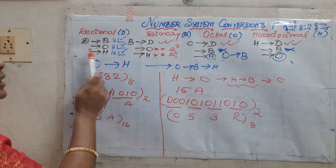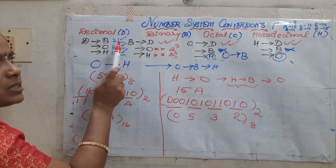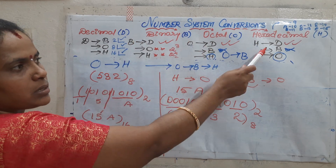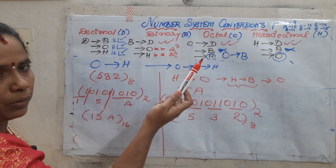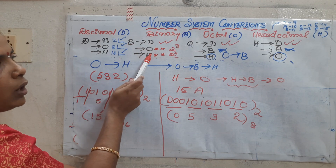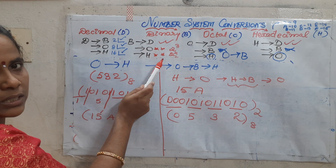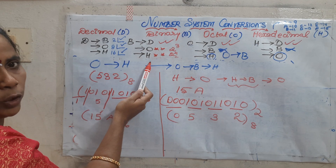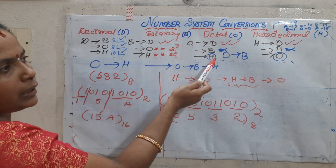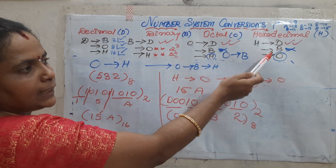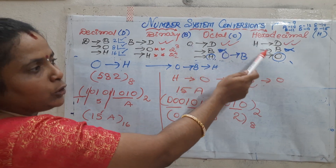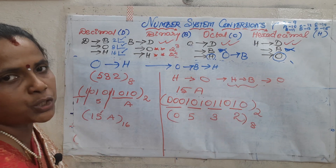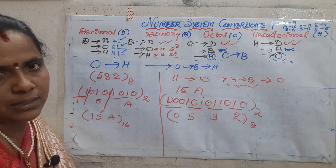With this I conclude the session. To summarize: decimal to any other number system — successively divide by its base; any other number system to decimal — multiply by its positional powers; binary to octal means group in terms of 3 digits from the right, binary to hexadecimal means group in terms of 4 bits from the right; for octal to hexa and hexa to octal you cannot do it directly — you must go through one intermediate conversion to get your final answer. Thank you.